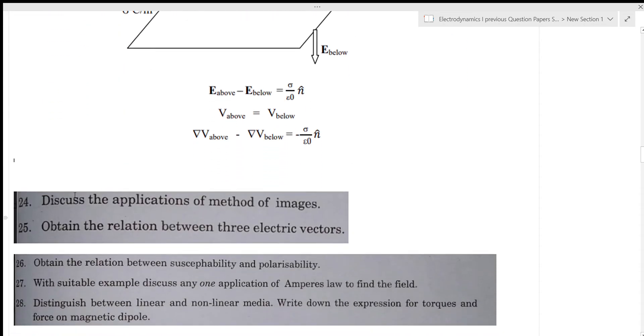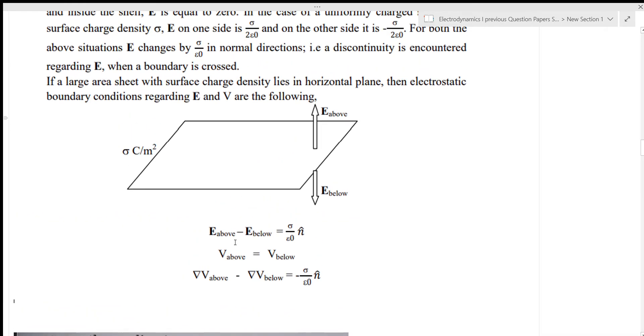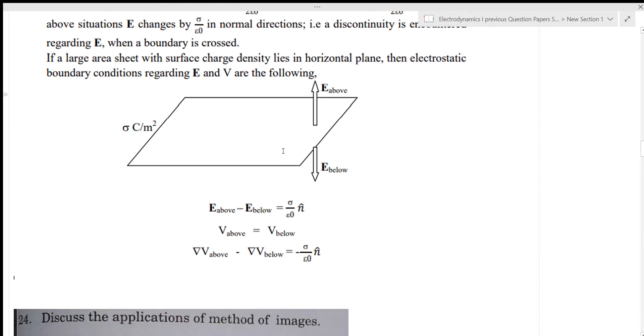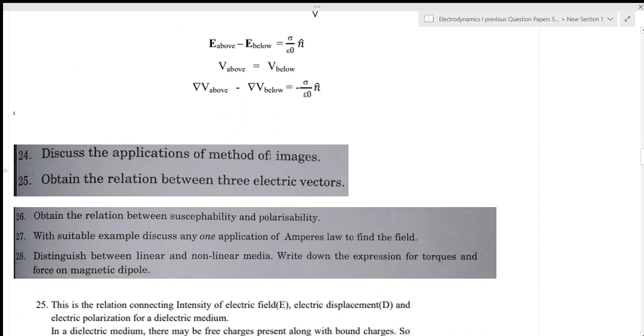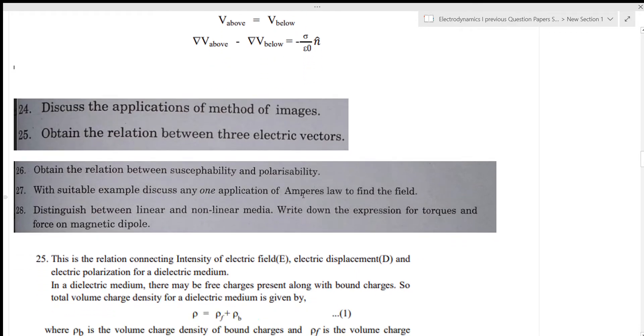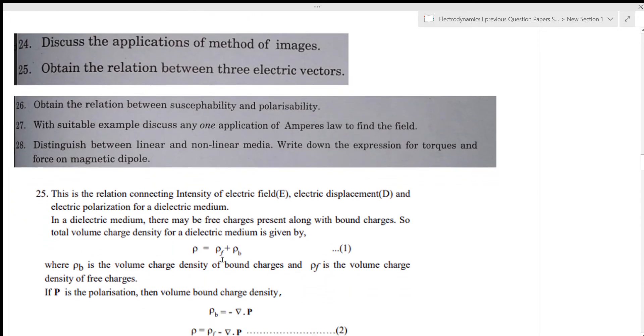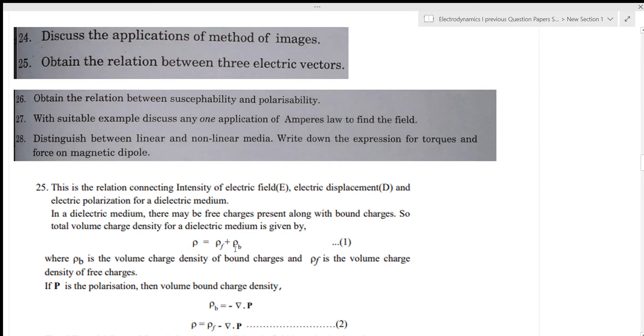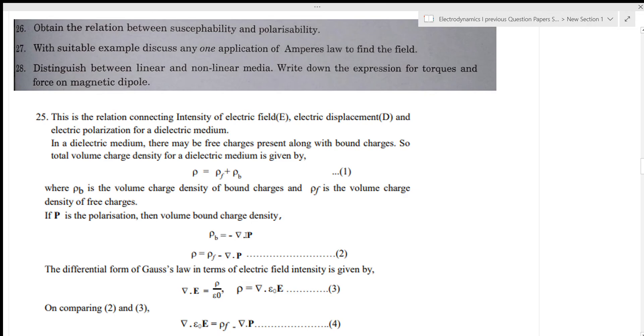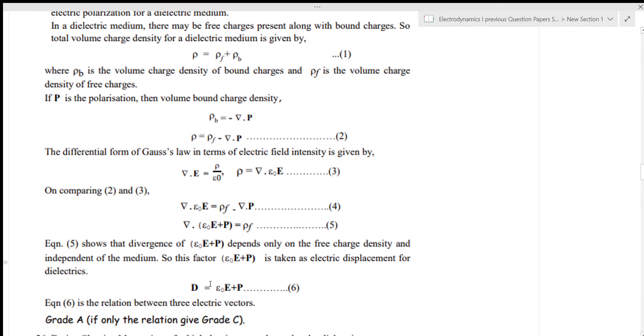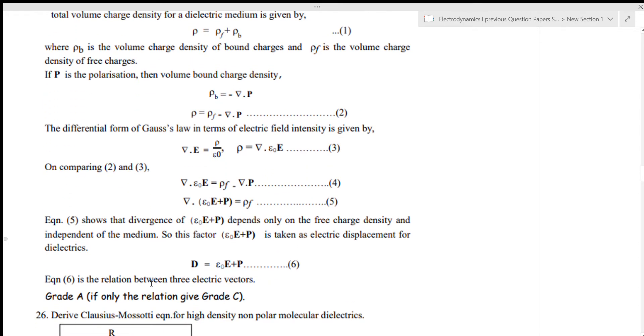The 24th question about electric polarization. The relation between three electric vectors: D equal to epsilon zero E plus P. This is the relation between the three electric vectors.